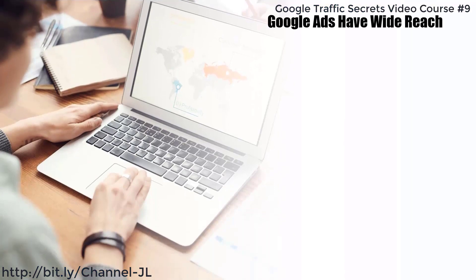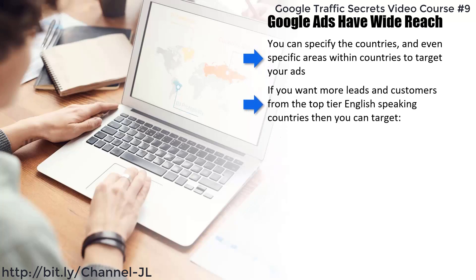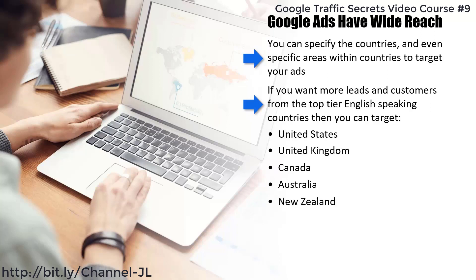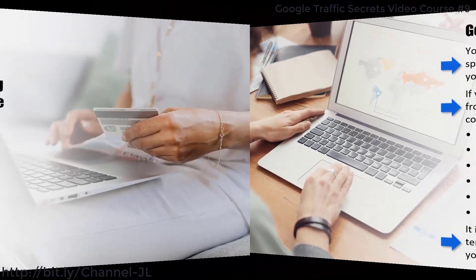Google Ads have wide reach. You can specify the countries and even specific areas within countries to target your ads. If you want more leads and customers from the top-tier English-speaking countries, you can target the United States, United Kingdom, Canada, Australia, New Zealand, and Ireland. Your ads will only be shown in these countries and nowhere else. If you have a dog training product to promote, you can use your keyword list and add those keywords to your campaign. It is in your interest to go for keyword terms most relevant to what you are offering — you do not want to waste money on clicks where the visitor is not interested in what you have to offer.